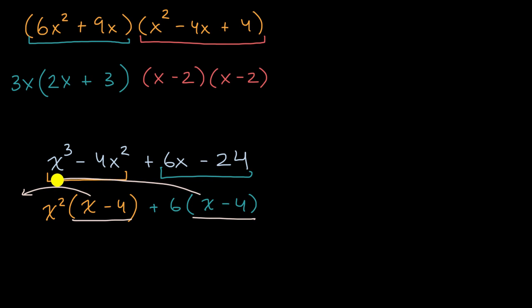And so this is going to be (x - 4) times x², x² + 6. And we are done.